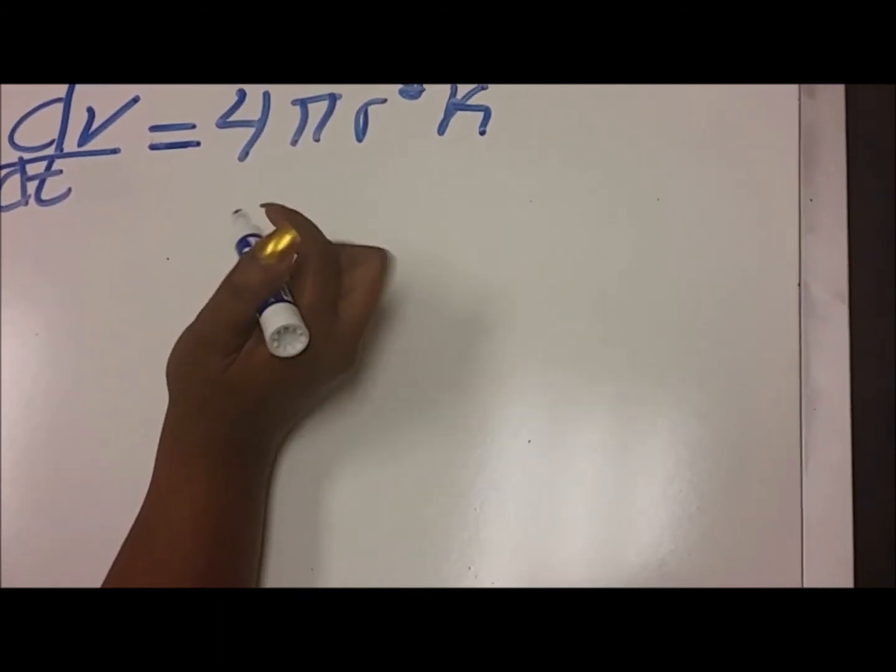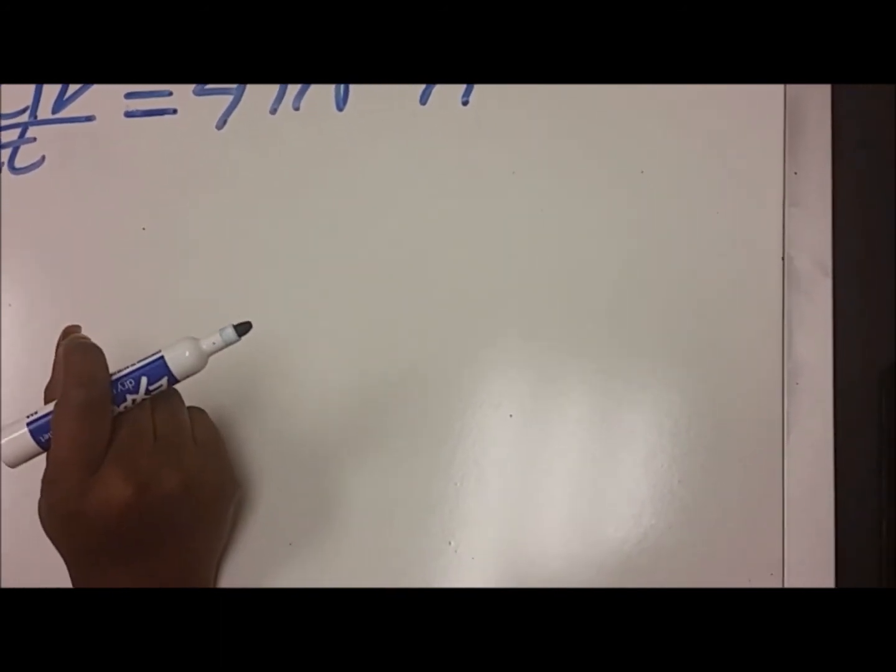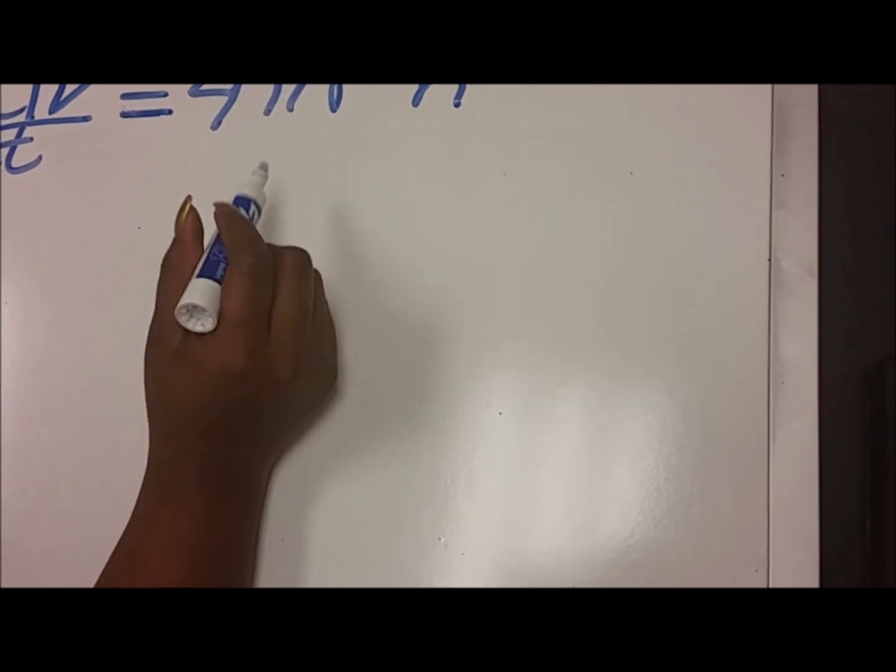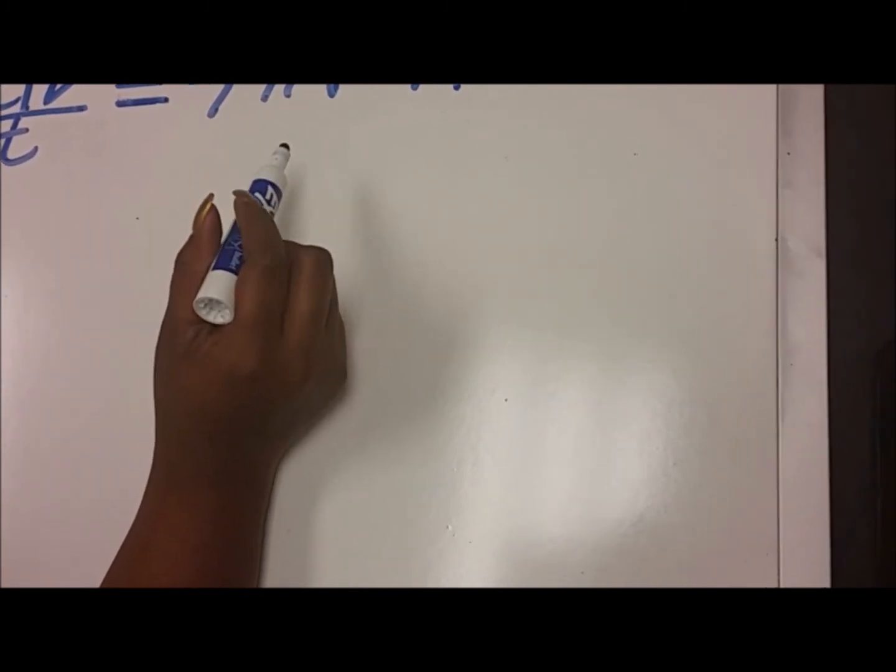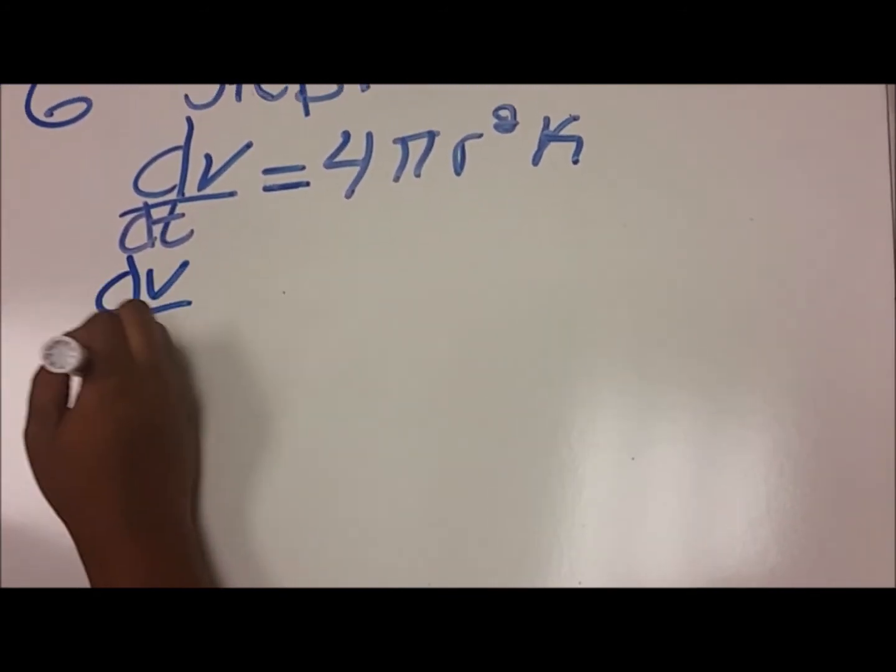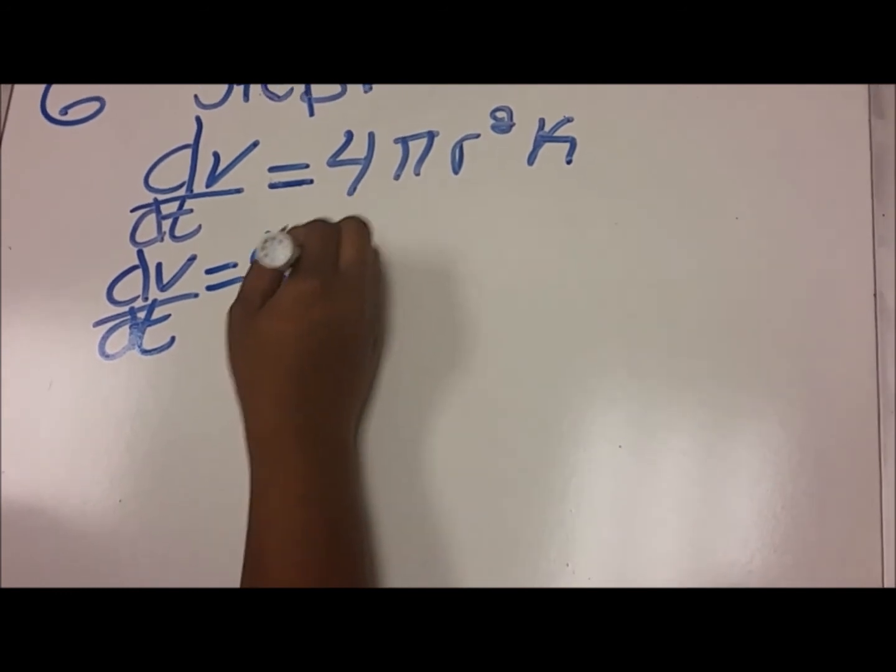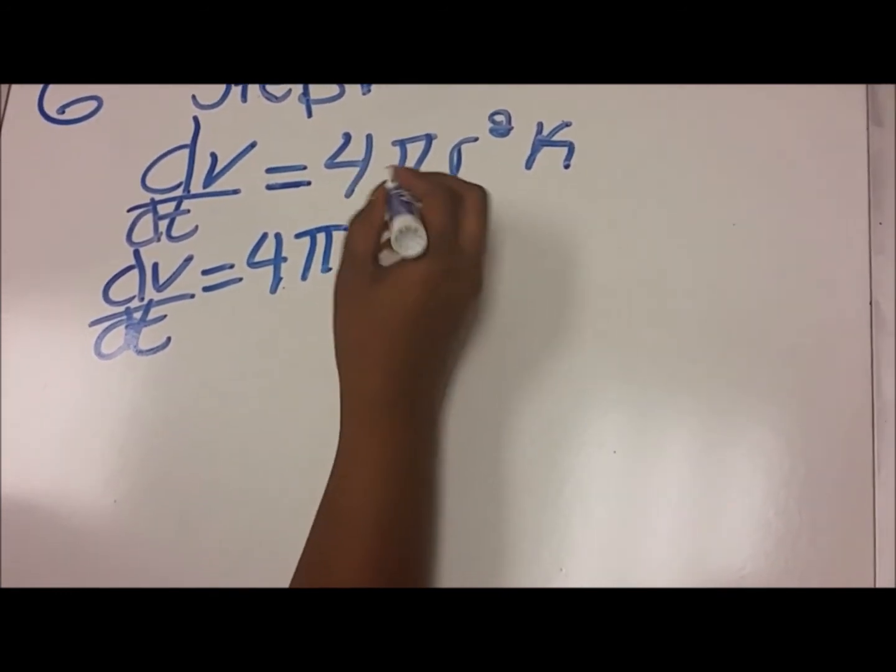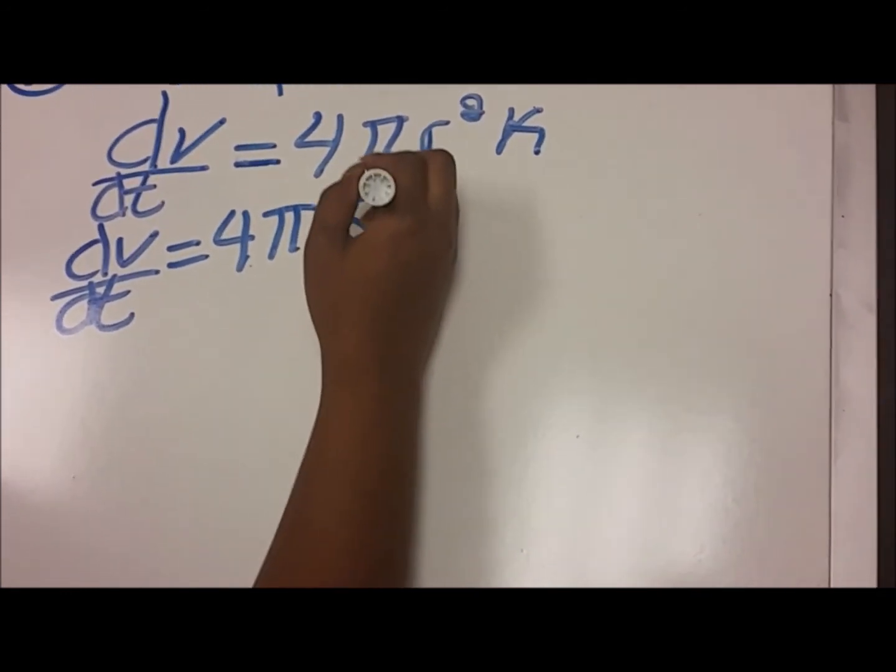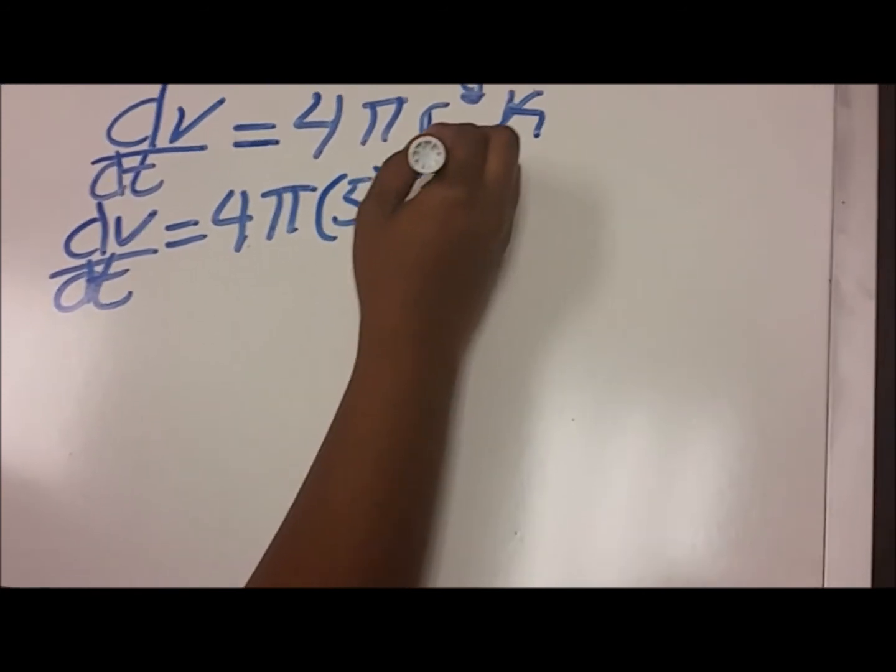dv dt is equal to 4 pi r squared k. In our substitution, we are going to substitute 5, which is the radius, 5 millimeters into the equation. So dv dt is equal to 4 pi times 5 millimeters, which is the radius, squared times k.